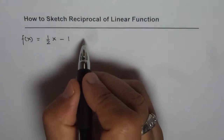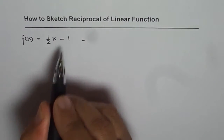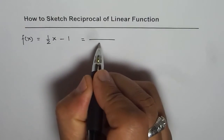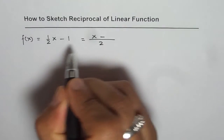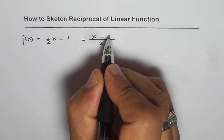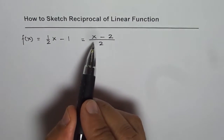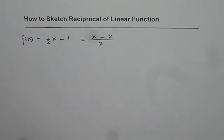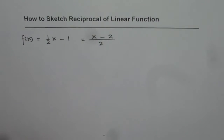We can also write this linear function by taking 2 as a common denominator, giving us f of x equals x minus 2 over 2. So that is the function we are talking about.